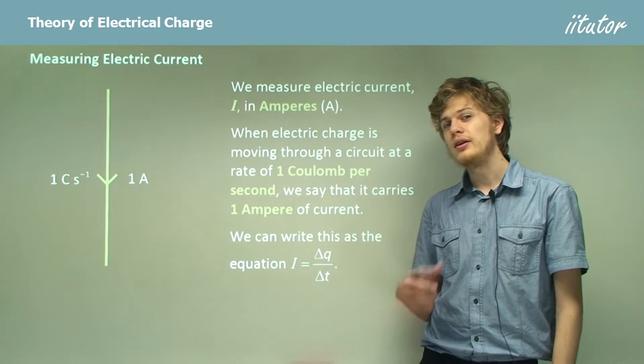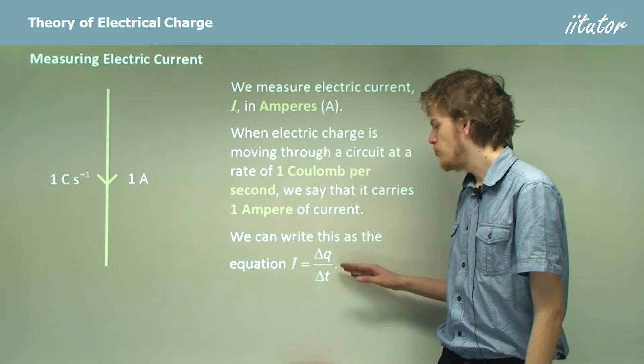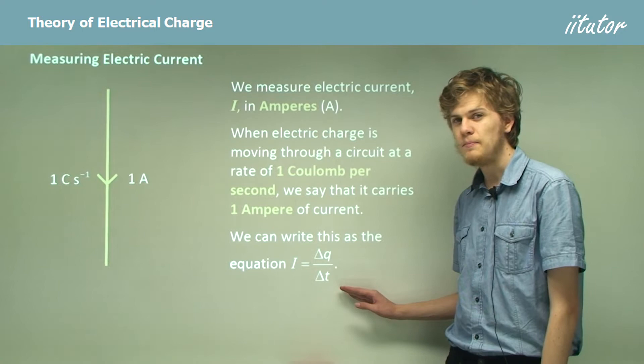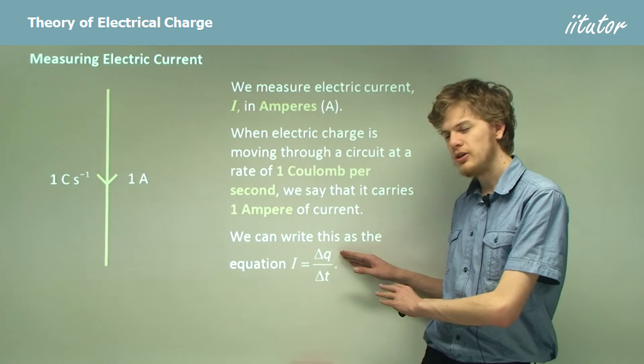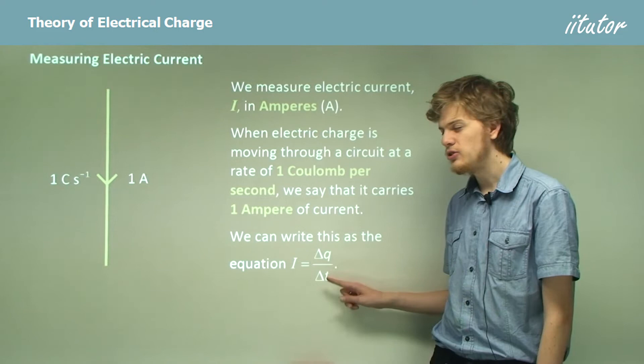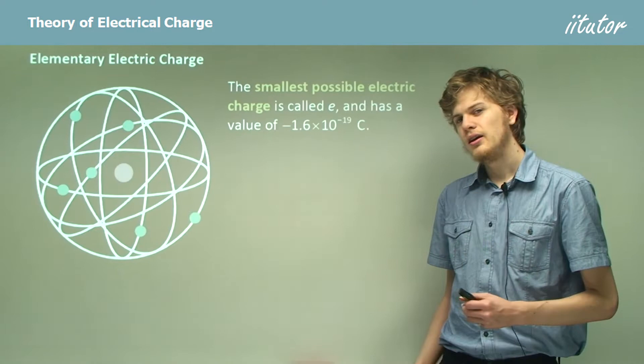If we want we can write an equation to represent this. Electric current, I, equals the change in electric charge, delta q, divided by the change in time, delta t. So if we were to graph the electric charge over time, then the slope of the graph, rise over run, change in charge over change in time, would give us the current flowing at that point in time.